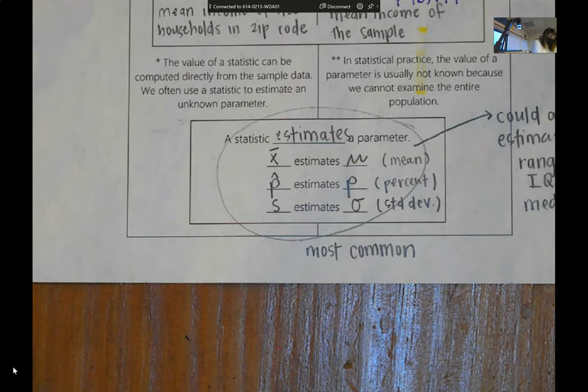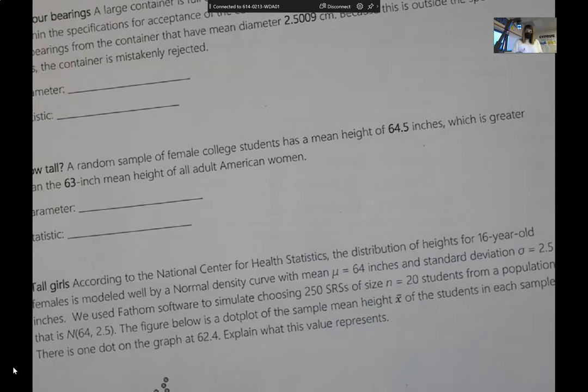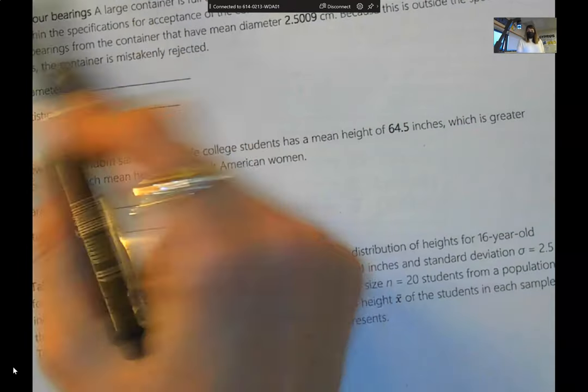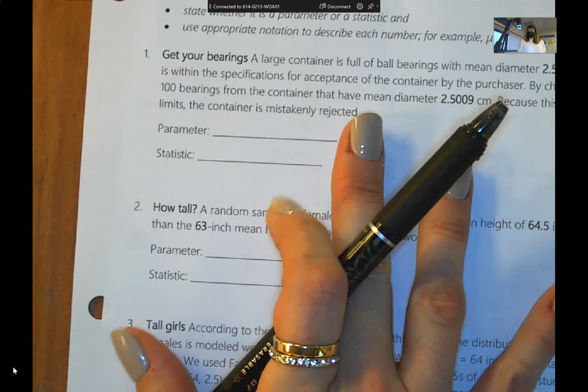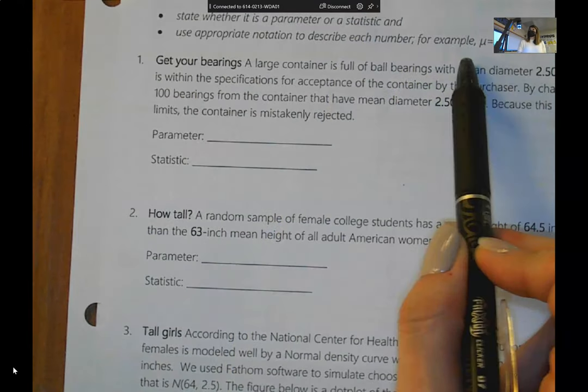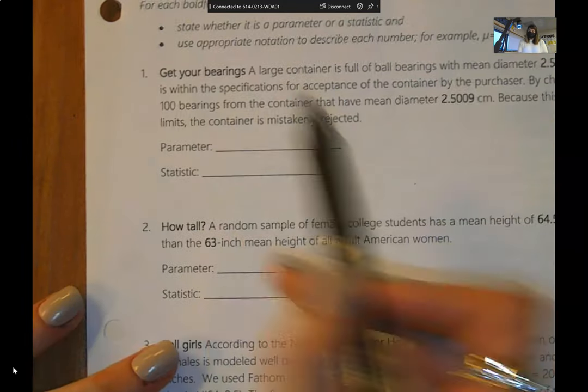That leads right into question one and two on your Can You Do. It gives you a scenario, and it wants you to identify the parameter and the statistic. Notice up here that it says you don't have to state whether it's a parameter or statistic because I wrote it down for you, but use the appropriate notation.